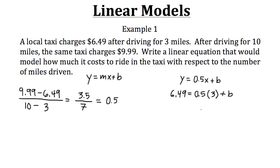Now let's simplify. We have 6.49 on the left side. That's going to equal 0.5 times 3. Well 0.5 times 3 will give us 1.5, and then we still have our plus b.